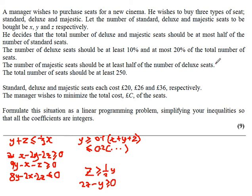The total number of seats should be at least 250, so the next inequality is x plus y plus z is greater than or equal to 250. There are lots of inequalities here, and we're not actually going to solve this problem.